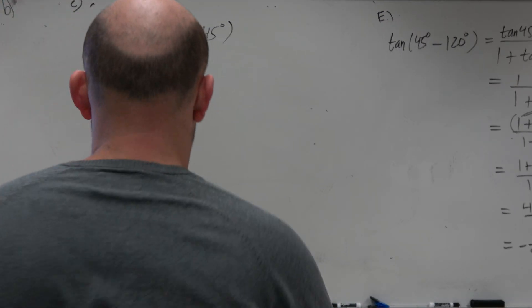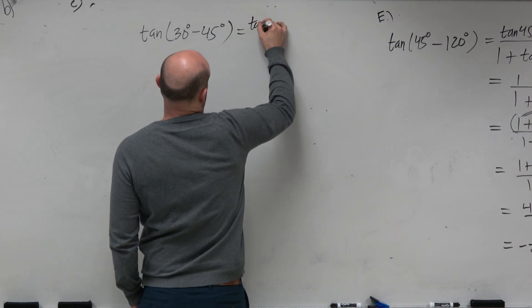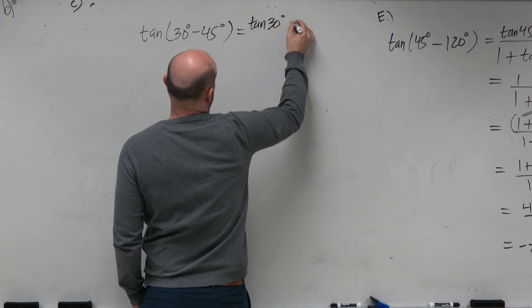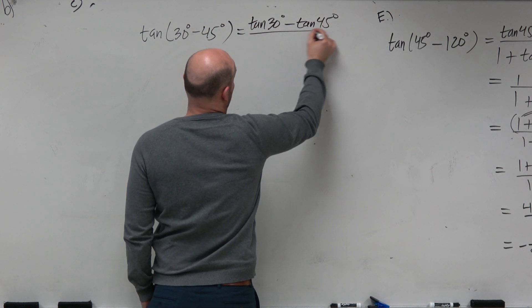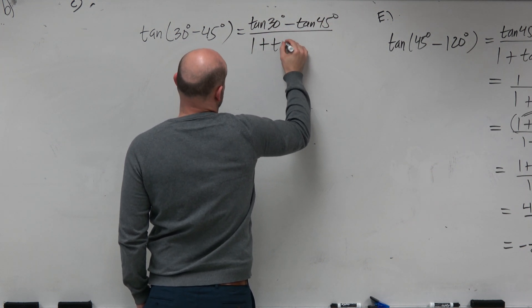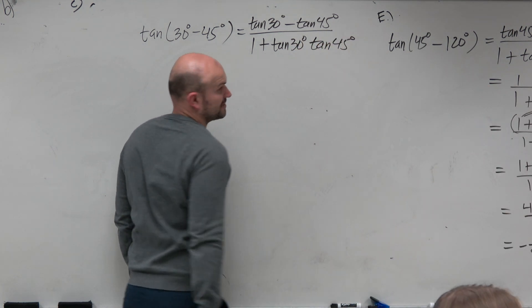Again, kind of doing the same thing. We can rewrite this as the tangent of 30 degrees minus the tangent of 45 degrees all over 1 plus the tangent of 30 degrees tangent of 45 degrees.